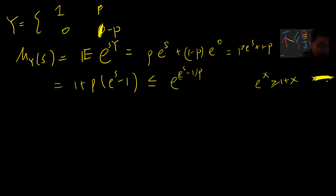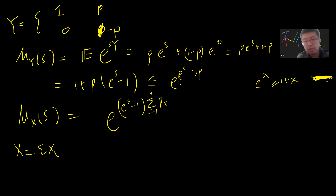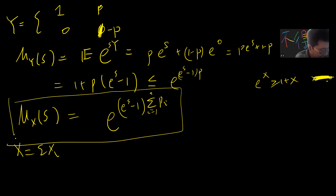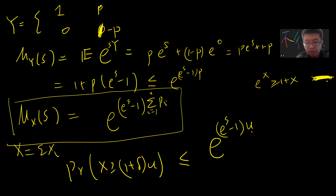Now we can get M_X(s), where X is the sum of independent Bernoulli variables. Using the product formula, M_X(s) ≤ exp((e^s − 1) · Σpi). And Σpi equals μ, so M_X(s) ≤ exp((e^s − 1)μ). We can now apply the Chernoff bound: probability of X ≥ (1 + δ)μ is less or equal to exp((e^s − 1)μ) / exp(s · (1 + δ)μ).